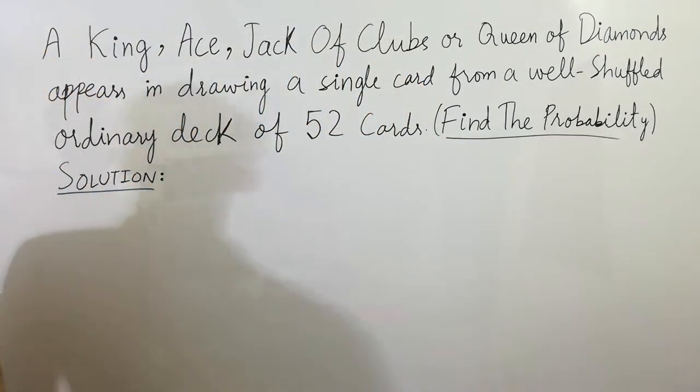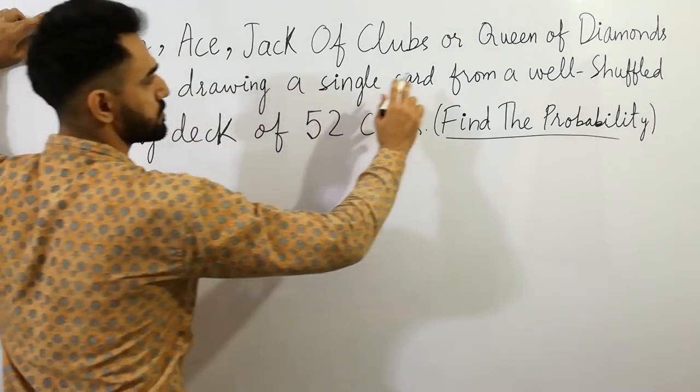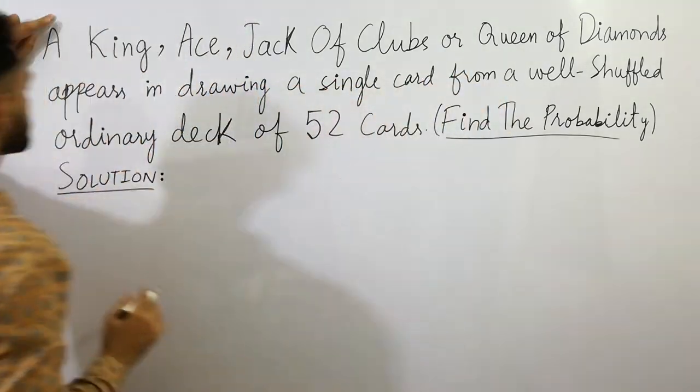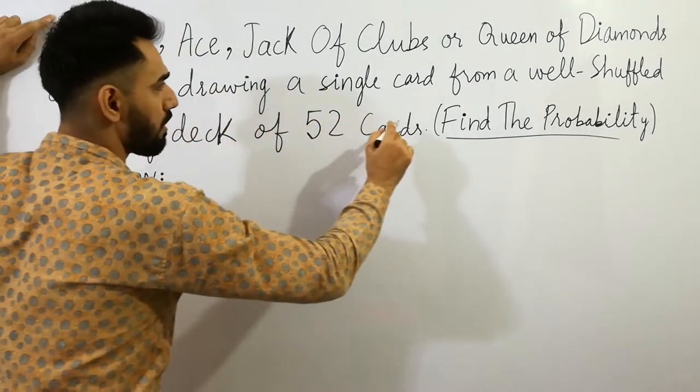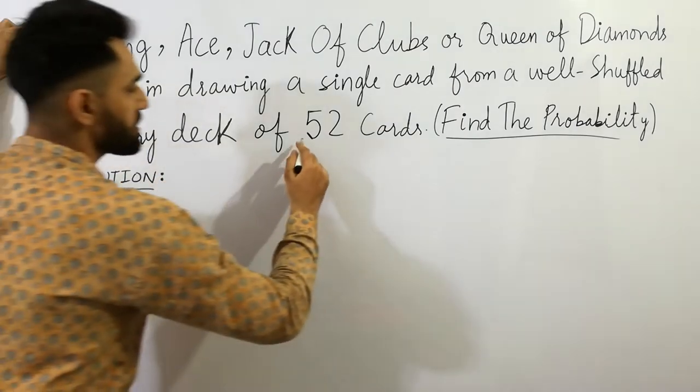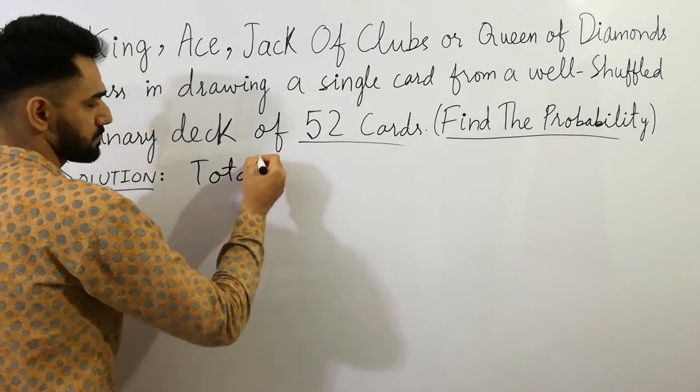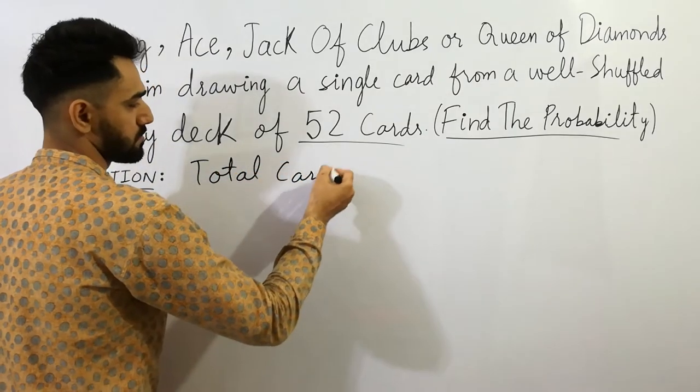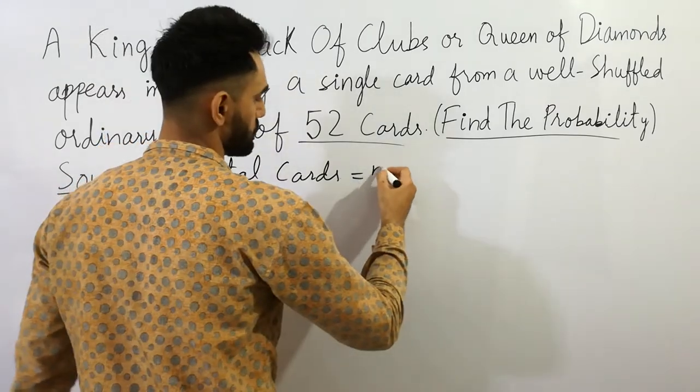Here you have to find the probability if a king, ace, jack of clubs, or queen of diamonds appeared in drawing a single card from a well-shuffled ordinary deck of 52 cards.